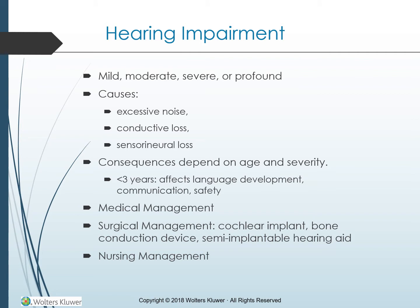Sensorineural hearing loss involves damage to the inner ear from conditions that affect the sensory hair cells or the nerves. Etiologies include atherosclerosis, tumors of the vestibulocochlear nerve, infections, and drug toxicity. A mixed hearing loss involves both conductive and sensorineural problems, involving damage within the outer or middle ear and in the inner ear or auditory nerve. Central hearing loss involves injury or damage to the nerves or the nuclei of the central nervous system.